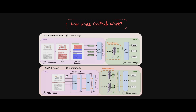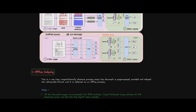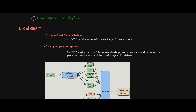In ColPali it's similar — your data goes through a vision encoder, then an LLM, and then the index is created. In the online process, similarity is checked and then the LLM is able to answer the question. Before discussing the different stages, let's talk about the components of ColPali.